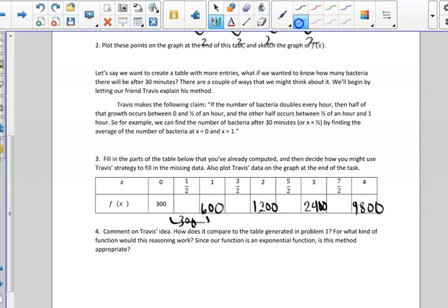that we should be able to divide 300 in half and get what the difference should be between 0 minutes and 30 minutes. So he's saying that the bacteria should grow by 150, so 300 plus 150 bacteria. He's saying that at 30 minutes should be 450 bacteria.